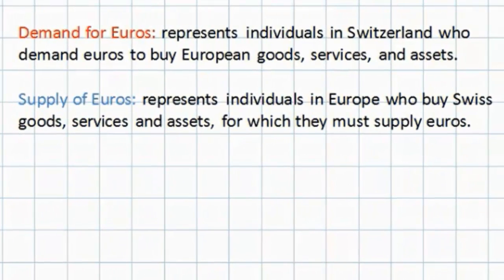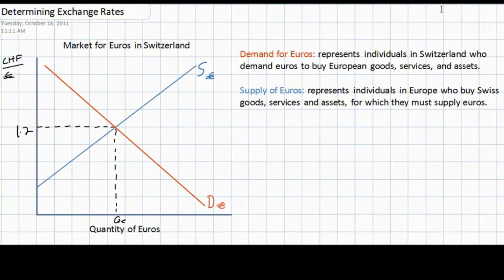The only reason there are euros available to Swiss individuals is because European individuals are buying Swiss goods, services, and assets. Therefore, the supply of euros in Switzerland comes from Europeans who are buying things made in Switzerland. The demand for euros comes from Swiss households, but the supply of euros comes from European households who are supplying their currency to the foreign exchange market in Switzerland in order to buy Swiss goods.